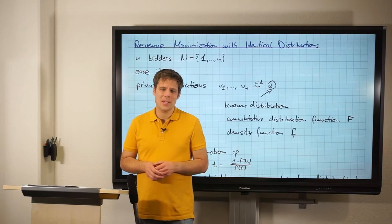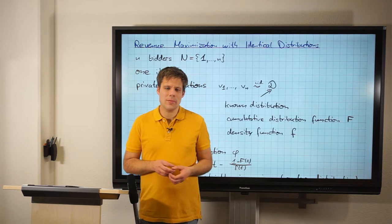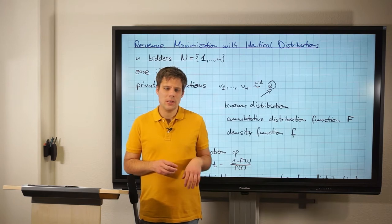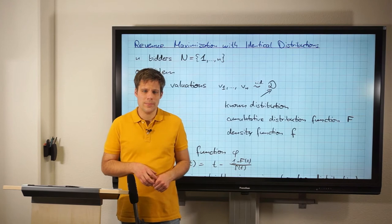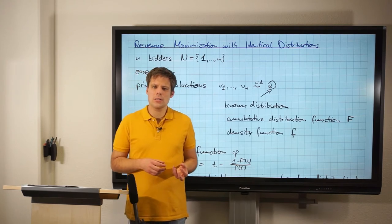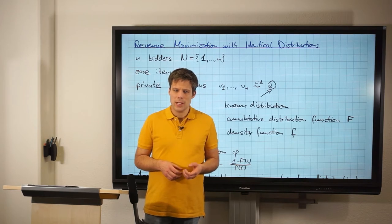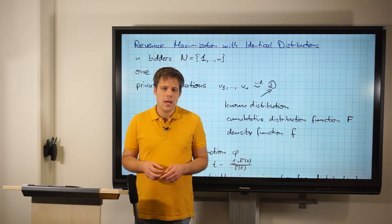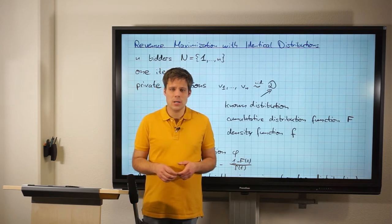Welcome back to Algorithmic Game Theory. In the last lecture we introduced the problem of revenue maximization, and we already derived the equality of expected revenue and expected virtual welfare. Today we are continuing our discussion of maximizing revenue, but for a special case: namely we assume to have only a single item, and we furthermore assume that all distributions are identical.